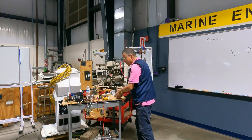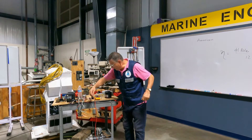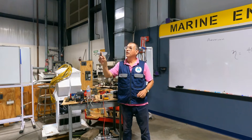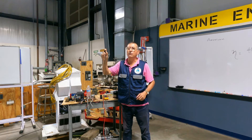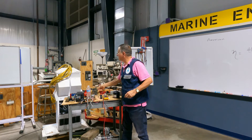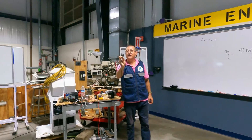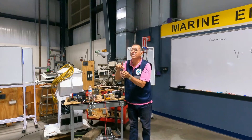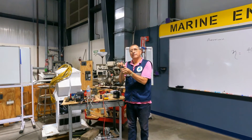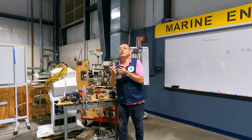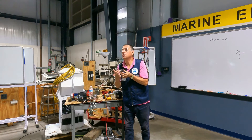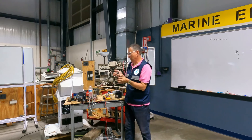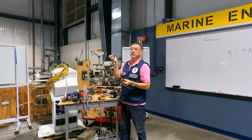The American power outlet has a hot, neutral, and round ground — between hot and neutral you have 120 volts. The European outlet has hot, neutral, and ground on the sides and base — between hot and neutral you have 230 volts.